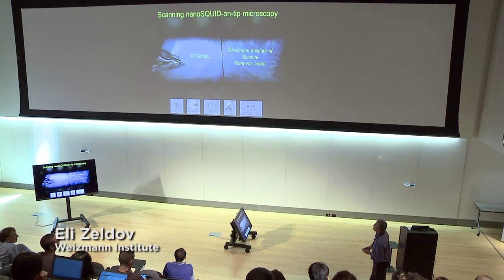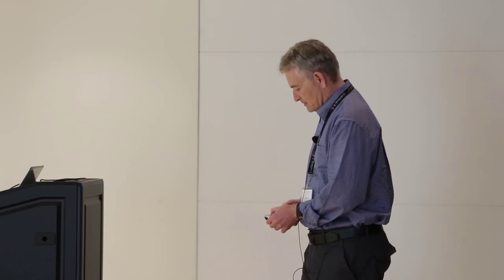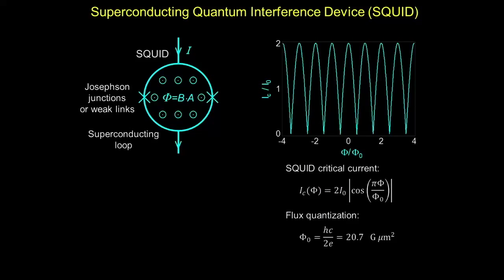I want to thank Rafi and the organizers for inviting me to this very interesting conference. I enjoyed it very much. I'll tell you about some recent developments of very small SQUIDs that we use for imaging nanomagnetic structures, doing vortex dynamics, and I'll give you some examples of what we use them for.